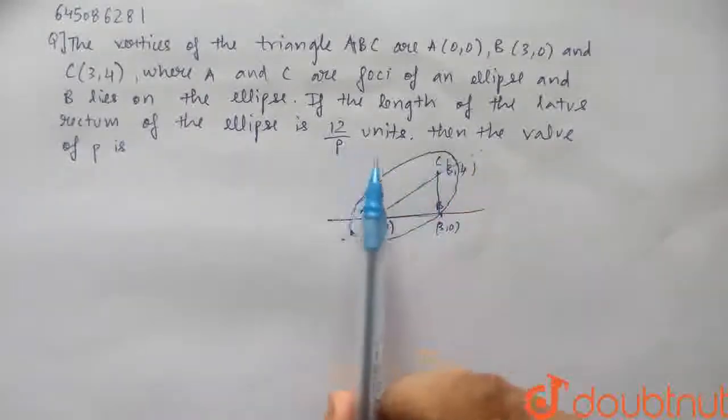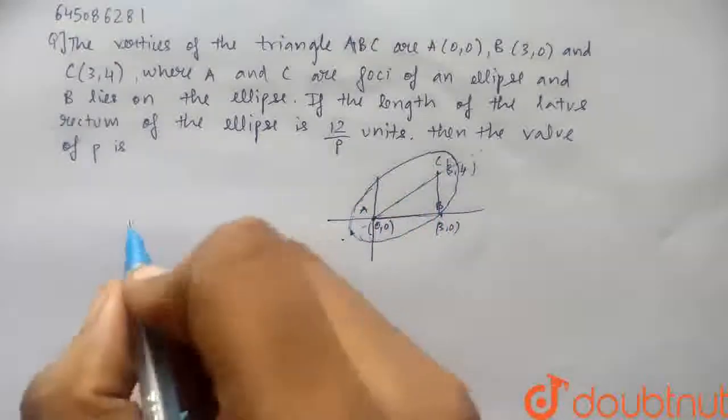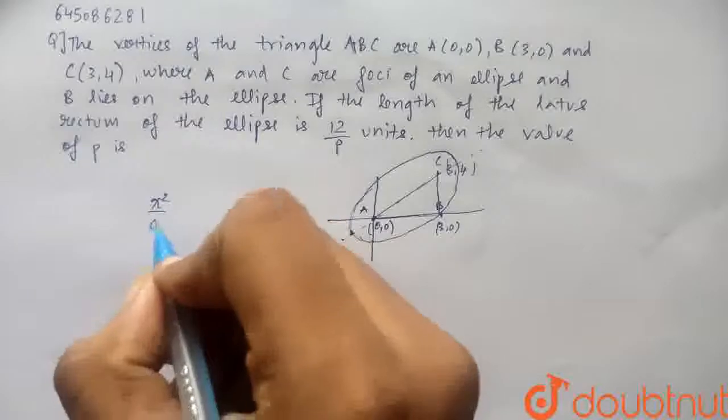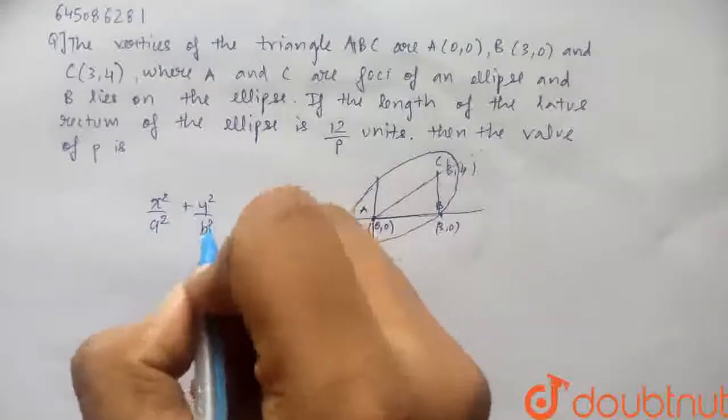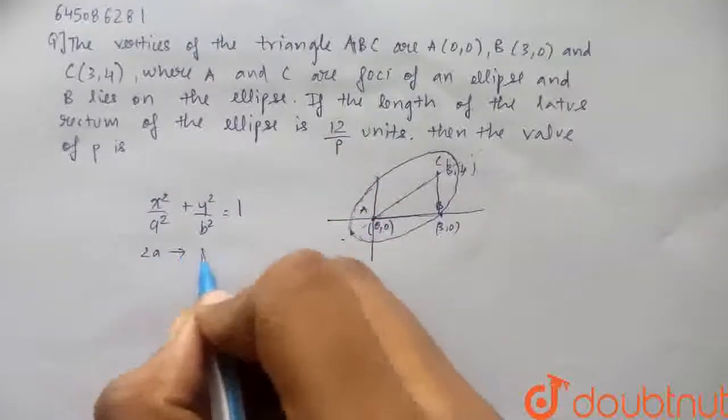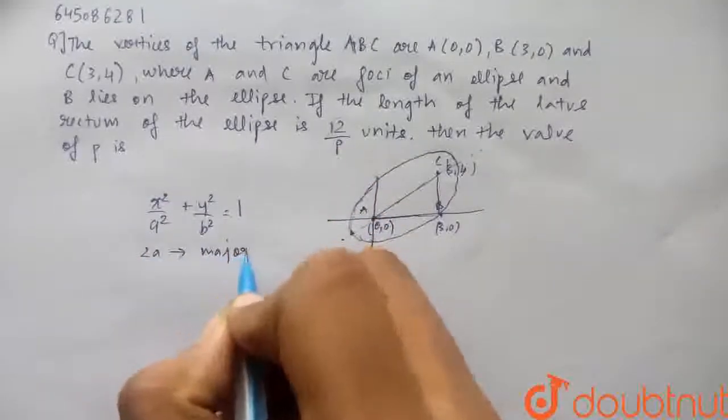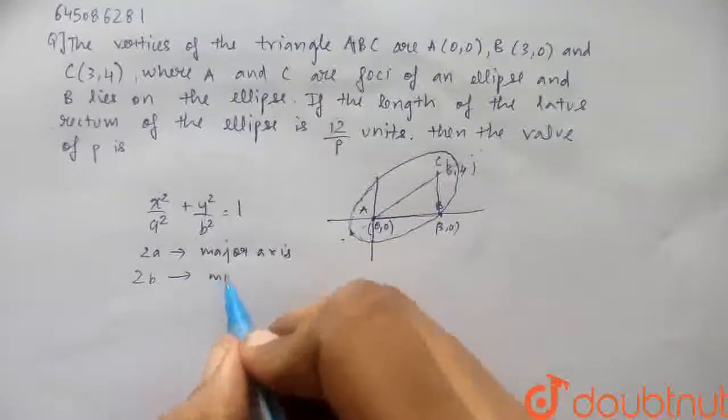So now we have to find the length of the latus rectum. So firstly, for this ellipse, if we write the general equation of the ellipse, it will look something like this which is x²/a² + y²/b² = 1. So if 2a is the major axis and 2b is the minor axis.